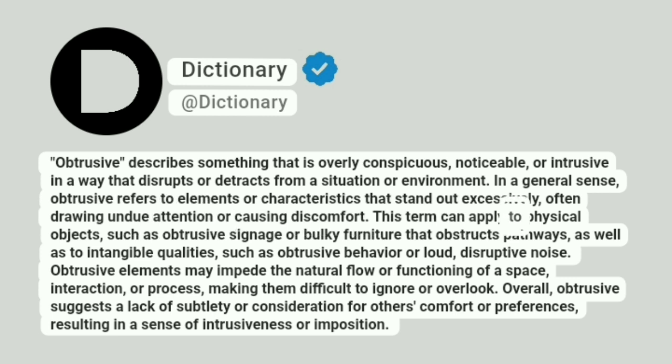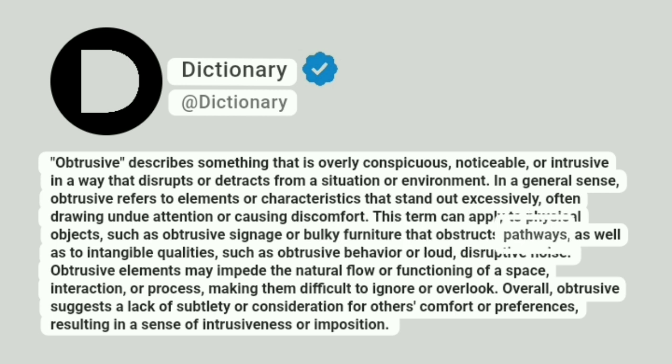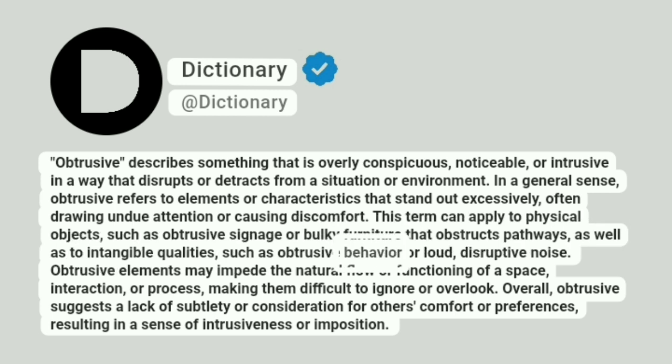This term can apply to physical objects, such as obtrusive signage or bulky furniture that obstructs pathways, as well as to intangible qualities, such as obtrusive behavior or loud, disruptive noise.